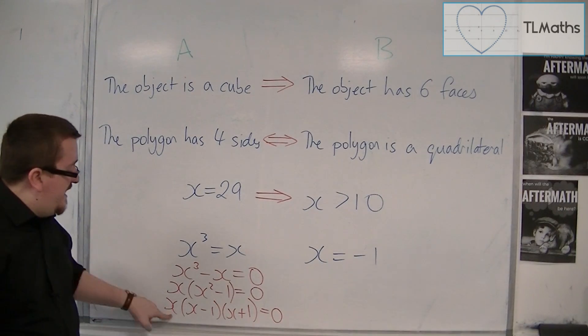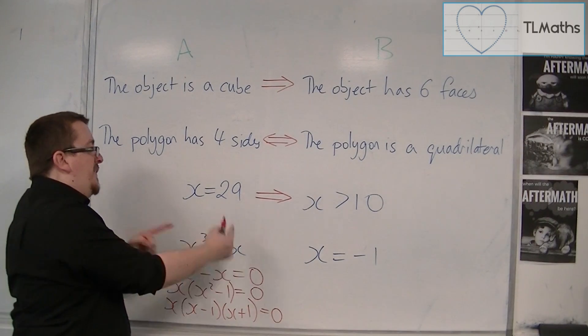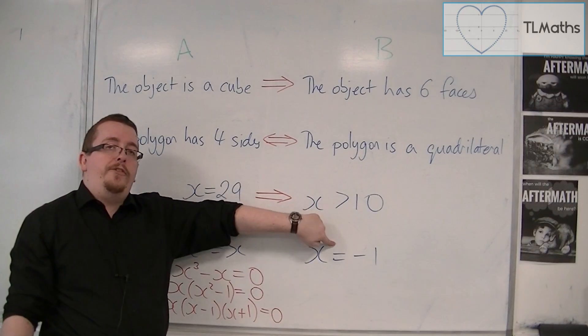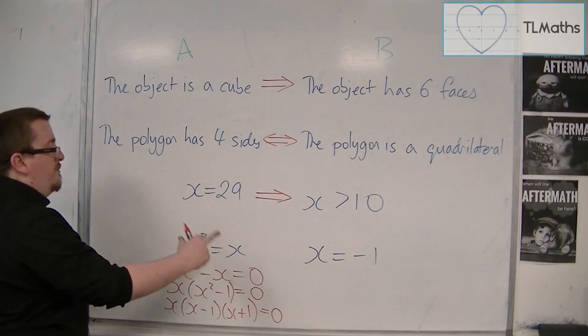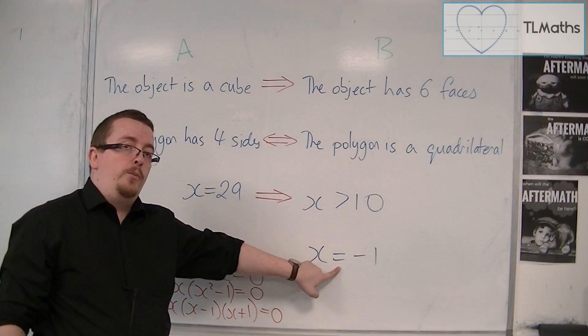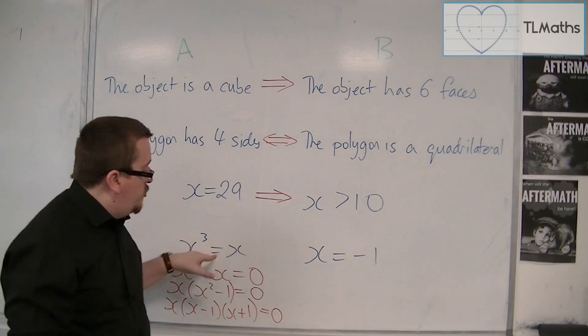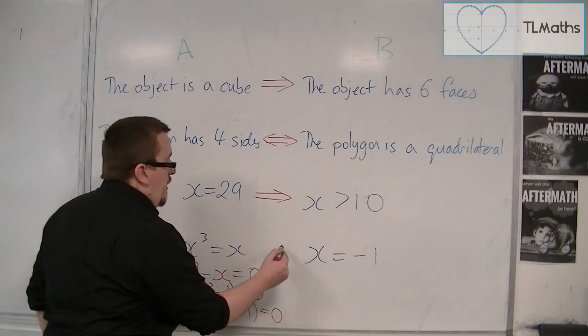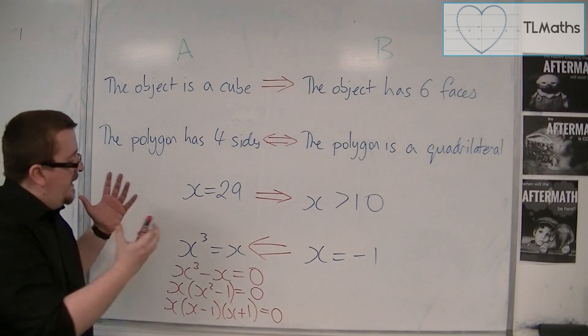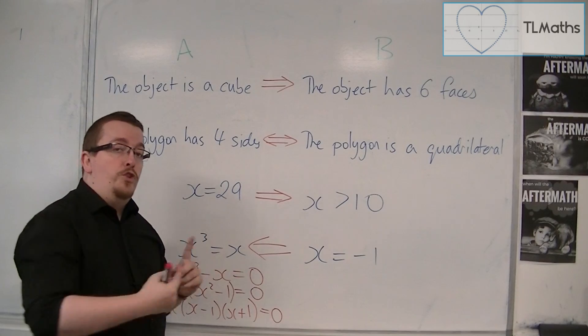And so x can be 0, 1 or minus 1. So if x cubed is x, that doesn't mean that x is just minus 1. So it doesn't work from going from left to right. But if x is minus 1, then this statement works. Then this is true. So it only works from right to left.